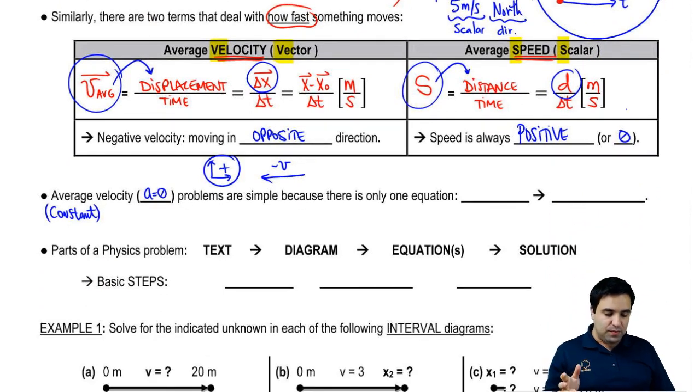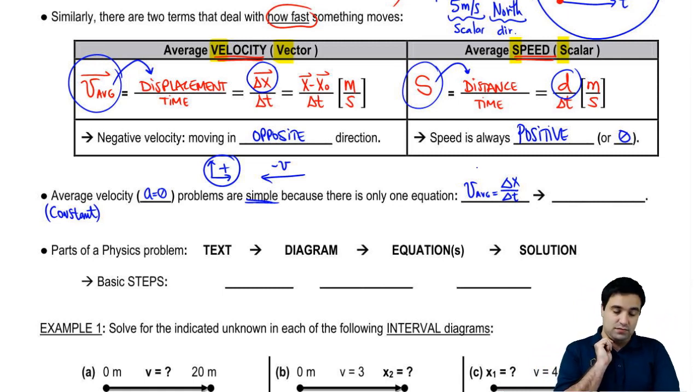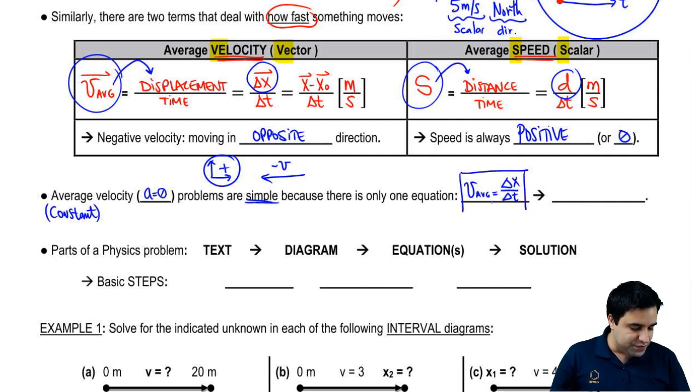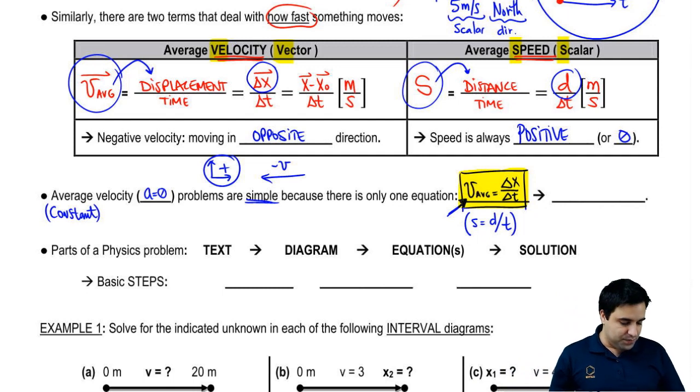What's good about these problems, they're simple, because there's only one equation. It's really hard to mess this up, because there's only one equation, and that equation is the one I just talked about. v average equals delta x over delta t. I want to point out something really important. This equation only works if you have no acceleration. This equation only works for you to find your velocity if you have no acceleration. Otherwise, what you're finding is the average velocity, not the actual velocity. Another version of this equation is s equals d over t. But generally, we're going to write it this way.